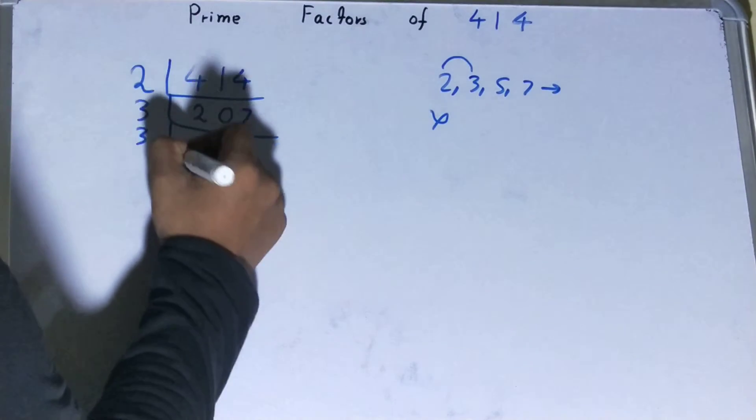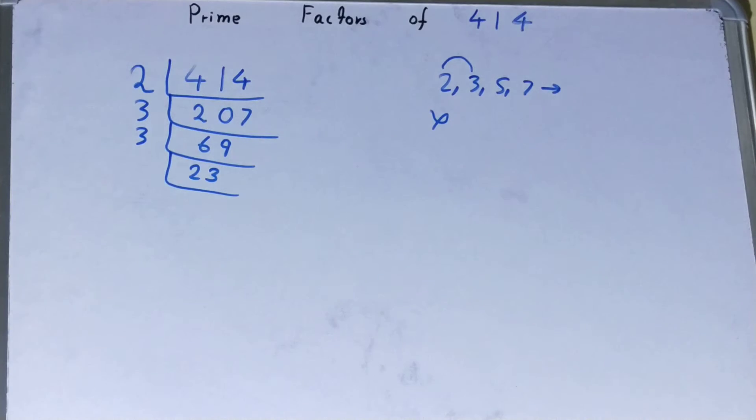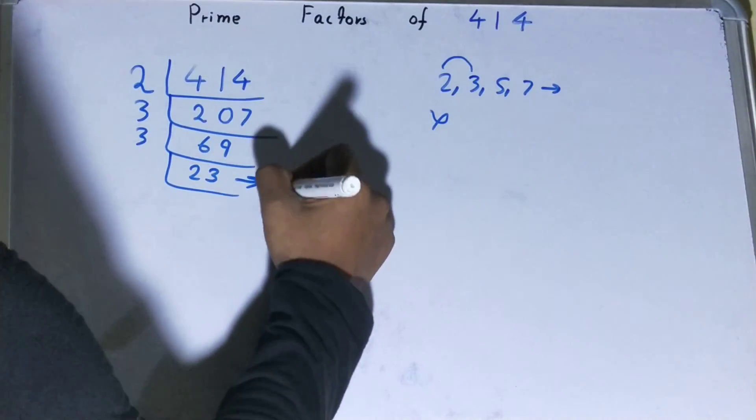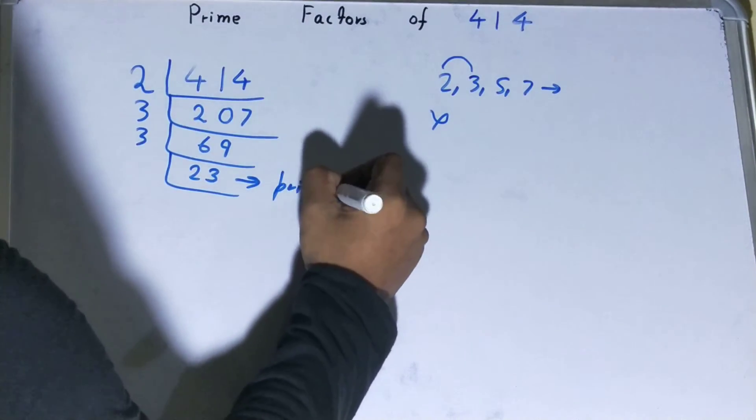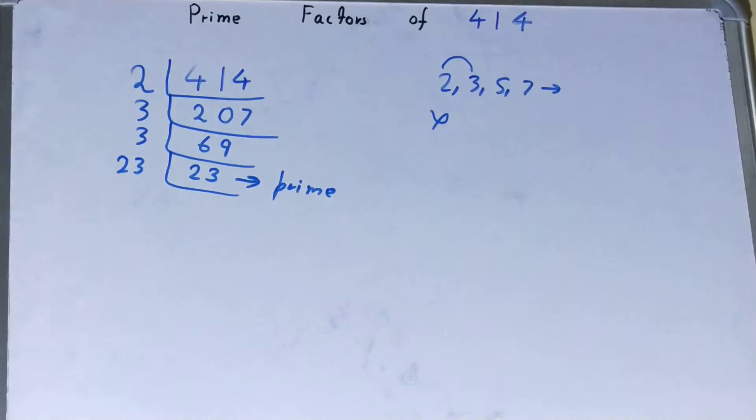So divide it and you will be left with 23. Is this 23 divisible by three? No, 23 is itself a prime number, so it is also not divisible by any other prime number other than itself. So to divide this 23, you need 23 on the left-hand side.